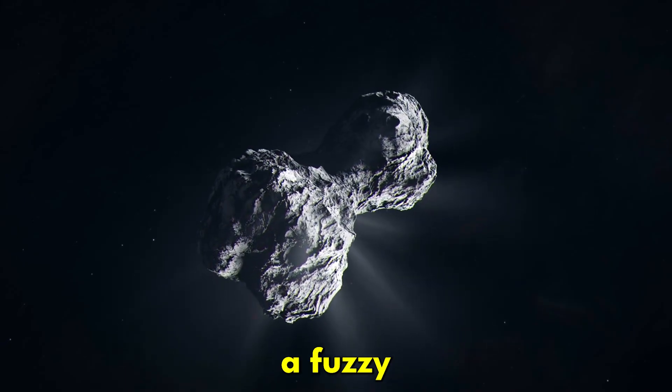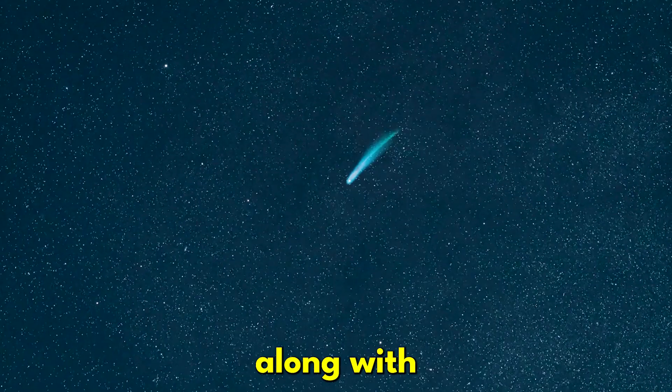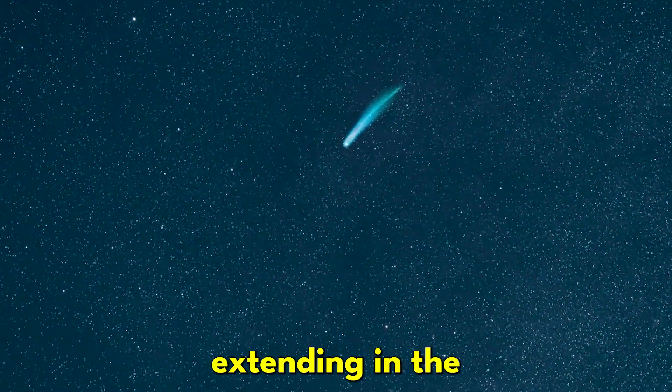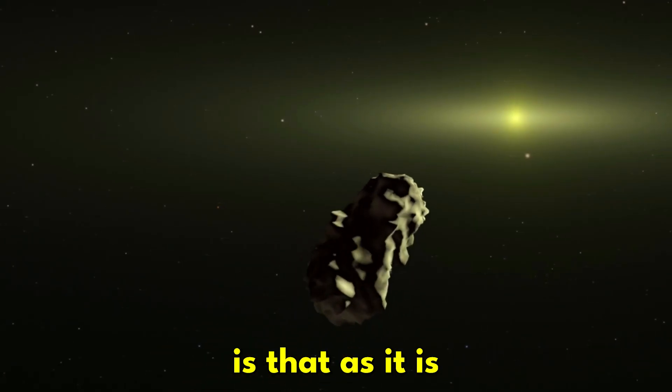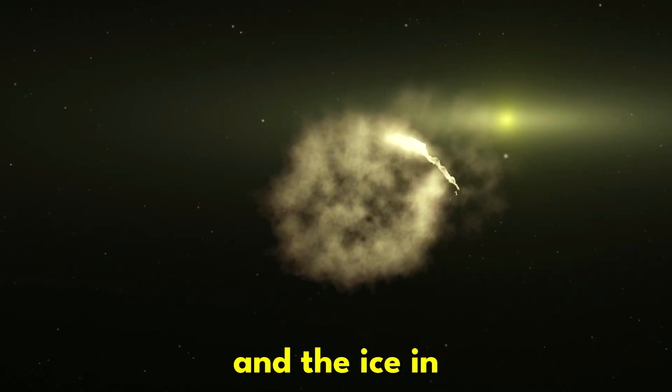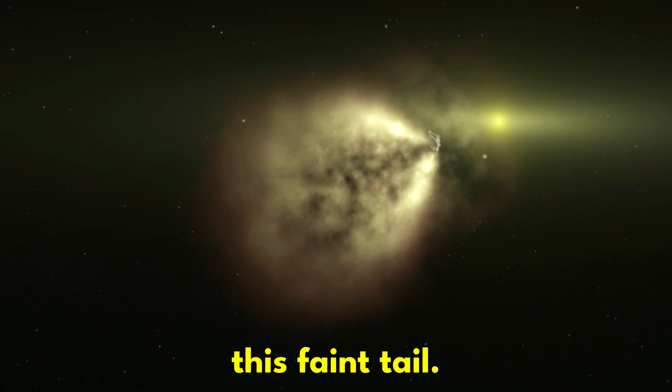Astronomers have discovered a fuzzy envelope of gas and dust surrounding this object, along with a short tail of gas and dust extending in the anti-solar direction. So what's likely happening is that as it is getting closer to the Sun, it is heating up, and the ice in this comet is melting, creating this faint tail.